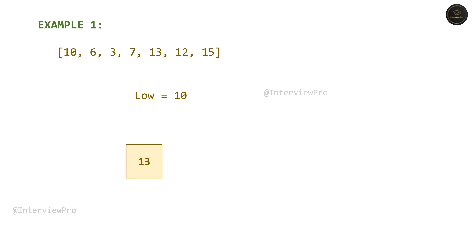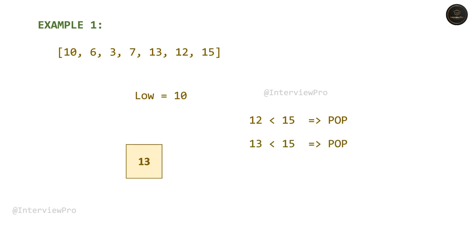Coming back to example 1, now we have 13 on the stack. Then we have 12 because it's greater than low, so we can insert it. Then we have 15. Now 12, which is the top of the stack, is less than 15, so we pop it. Then the top of the stack is 13, which is also less than 15, so we pop it and low is updated to 13. Then 15 is inserted onto the stack. We reached the end of the array, so this is a valid binary search pre-order sequence.